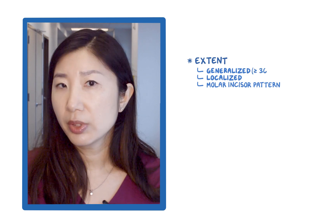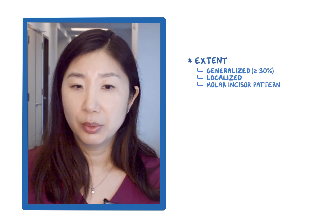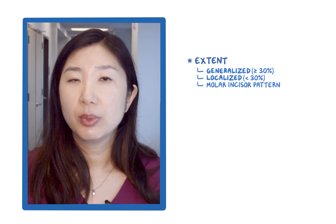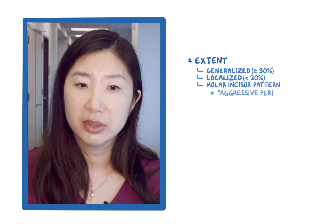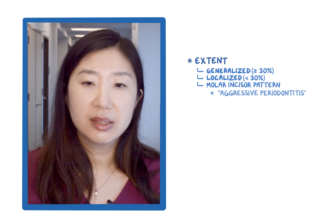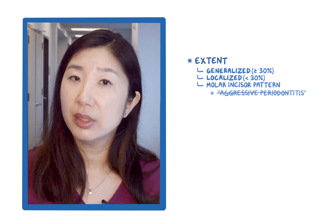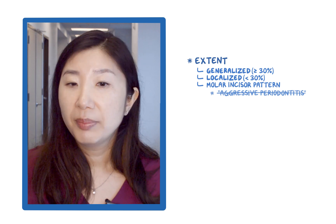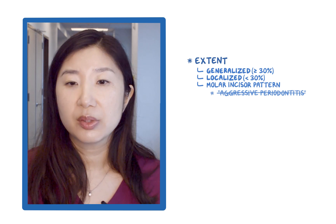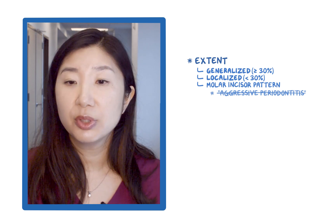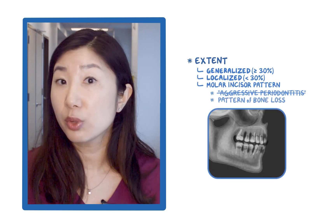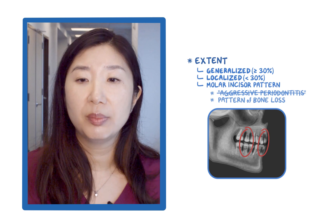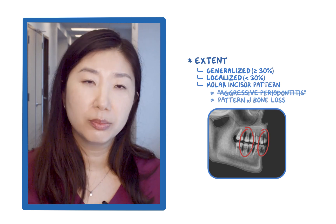Generalized is 30% or more teeth involved, and localized is less than 30%. The molar incisor pattern describes what used to be called aggressive periodontitis. Aggressive periodontitis is no longer a separate diagnosis but is combined in the same category of periodontitis. By designating it as a molar incisor pattern, which is a very specific and unique pattern of bone loss around certain teeth, this gives information to practitioners and patients about this very specific host-biofilm interaction.